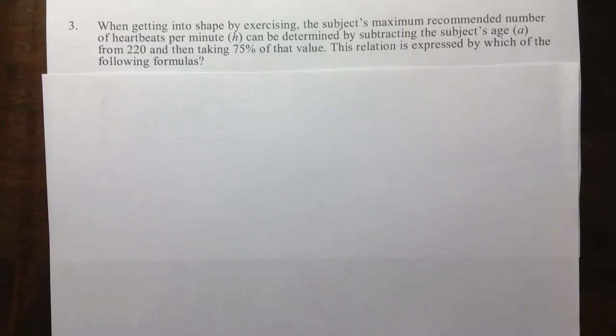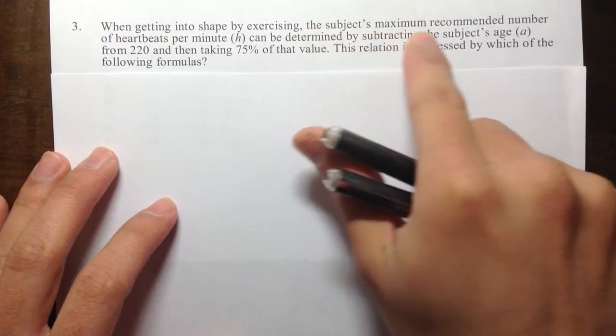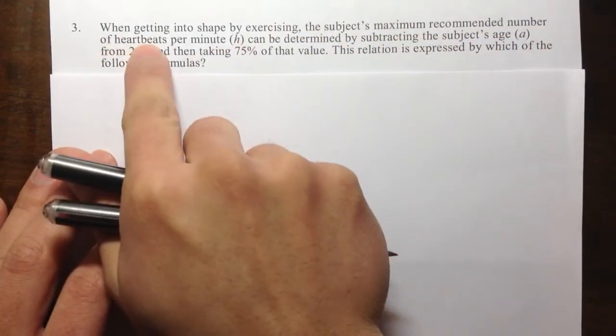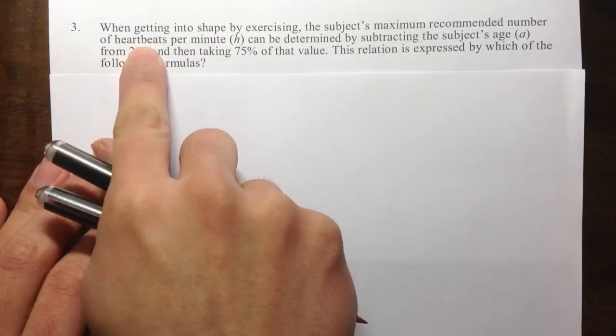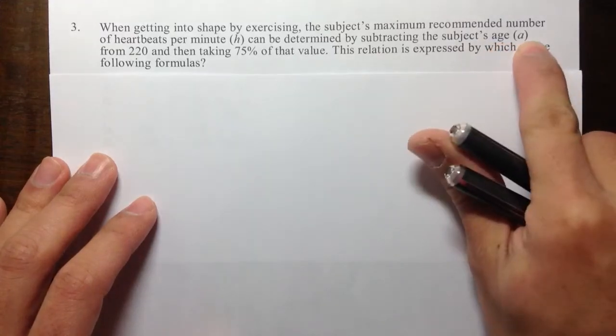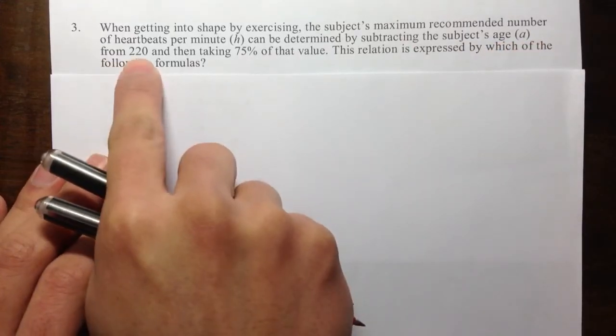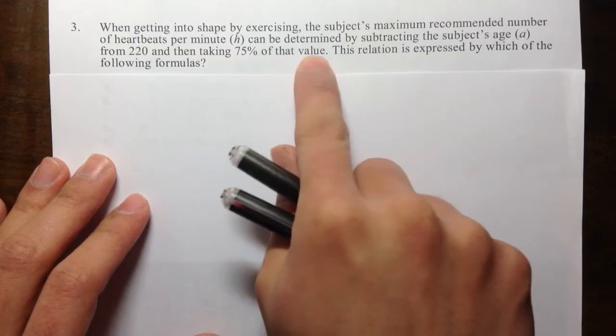Question number 3 is asking us to write a formula. It says that the subject's maximum recommended number of heartbeats per minute, and they are using H for heartbeats. It says that it can be determined by subtracting the subject's age, which they use A, from the number 220, and then take 75% of that value.